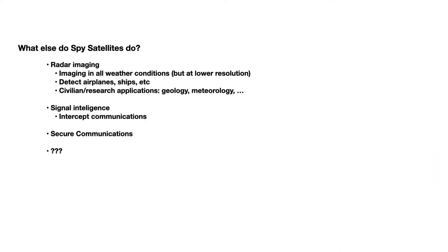But let's talk more broadly — what else do spy satellites do besides gather optical images? There are also spy satellites that do radar imaging, and this is important because radar imaging satellites can work in all weather conditions, though with lower resolution than optical imaging satellites. They can be used to detect airplanes, ships, and that type of thing. They've also found important civilian applications in fields like geology and meteorology, where they're used to map mountains, ocean levels, and to measure wind speeds.